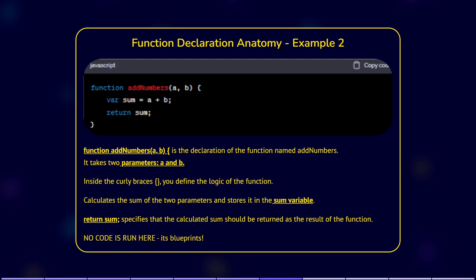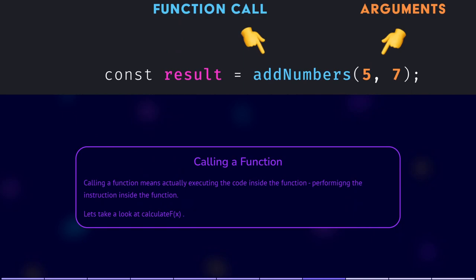So let's go through calling a function. This means that you actually execute the code inside the function. When you call a function, you use it to perform a specific task or operation. To call it, you need to provide the required arguments, values for its parameters. And the function executes its logic based on those values.